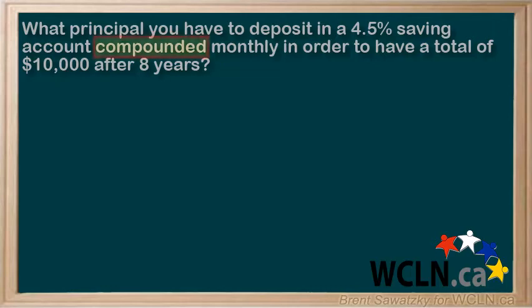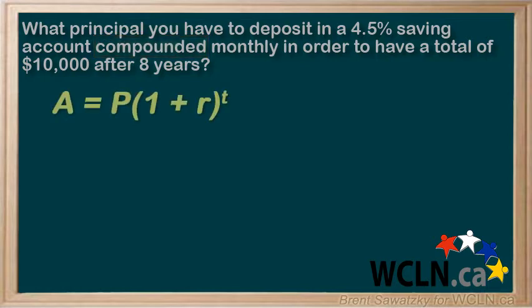This is clearly a compound interest question, so we'll write down our original compound interest formula: A equals P times (1 plus R) to the T.